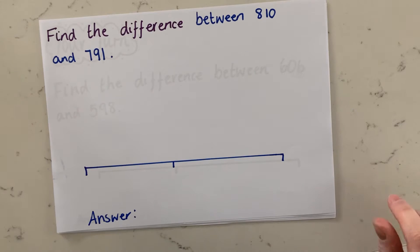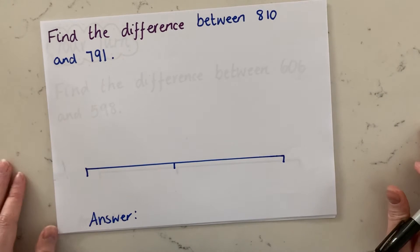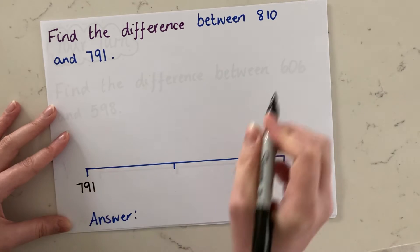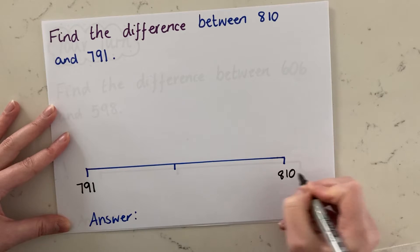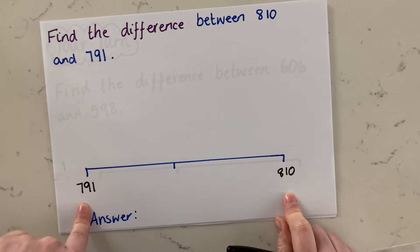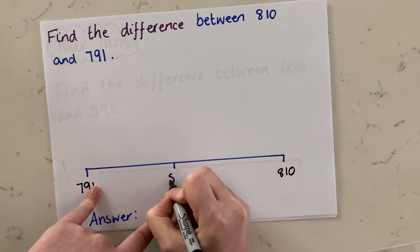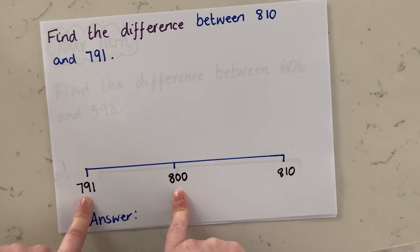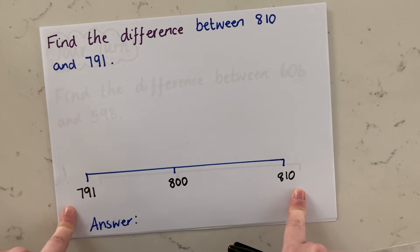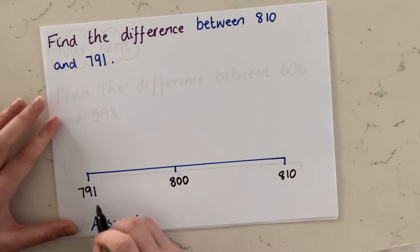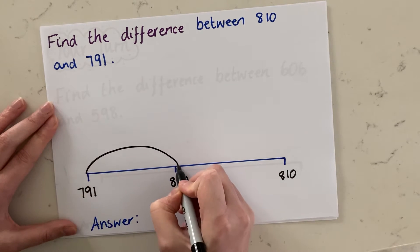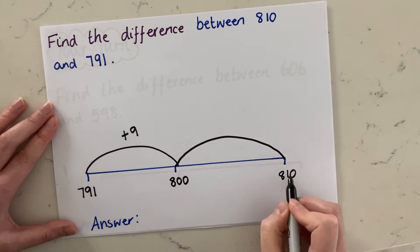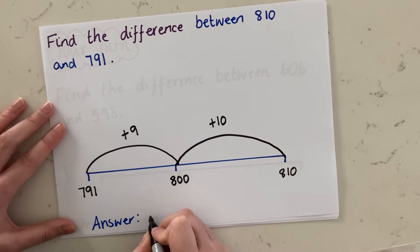Let's do another one together. Find the difference between 810 and 791. So the first thing we want to do is get our number line set up. The smallest number, 791, goes down here, and the bigger number, 810, goes up here. Both of these numbers are very close to 800, so they've both got the nearest hundred of 800 — that will help us break it down. So from 791, to get up to 800 we need to add on nine. And then from 800 up to 810, we add 10. So the answer is 19.